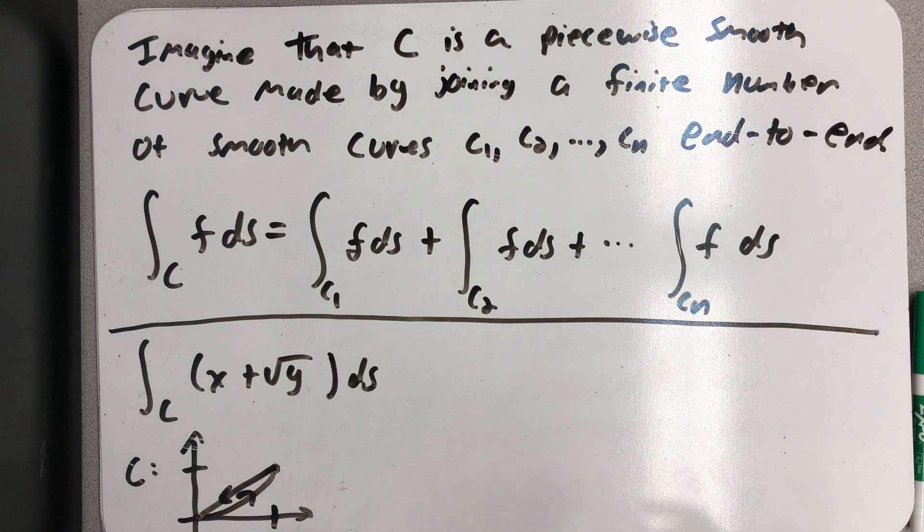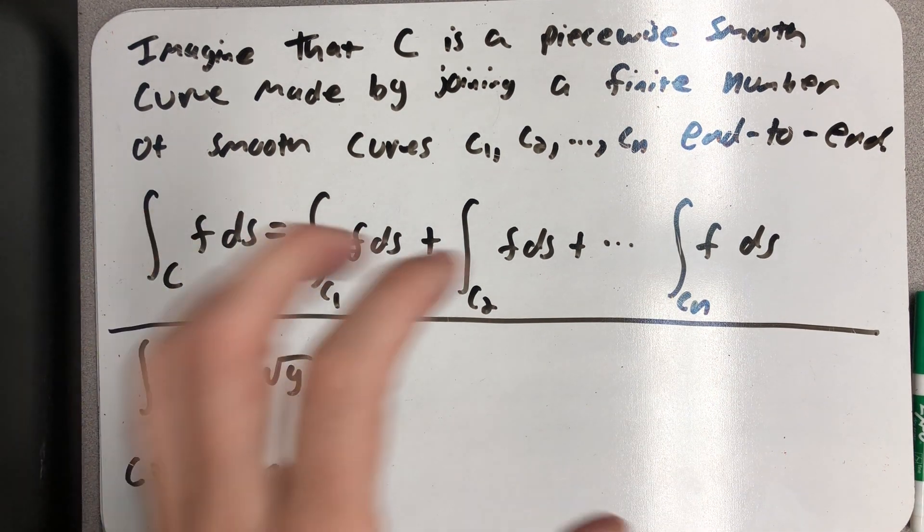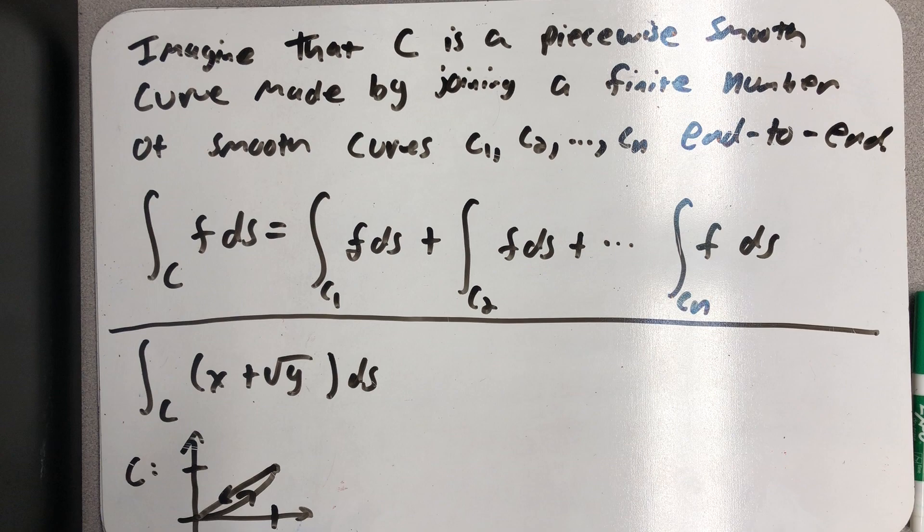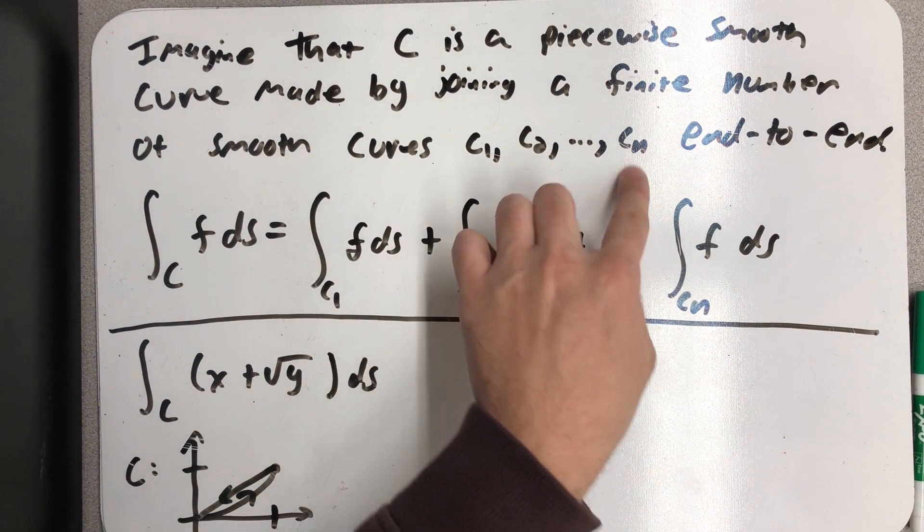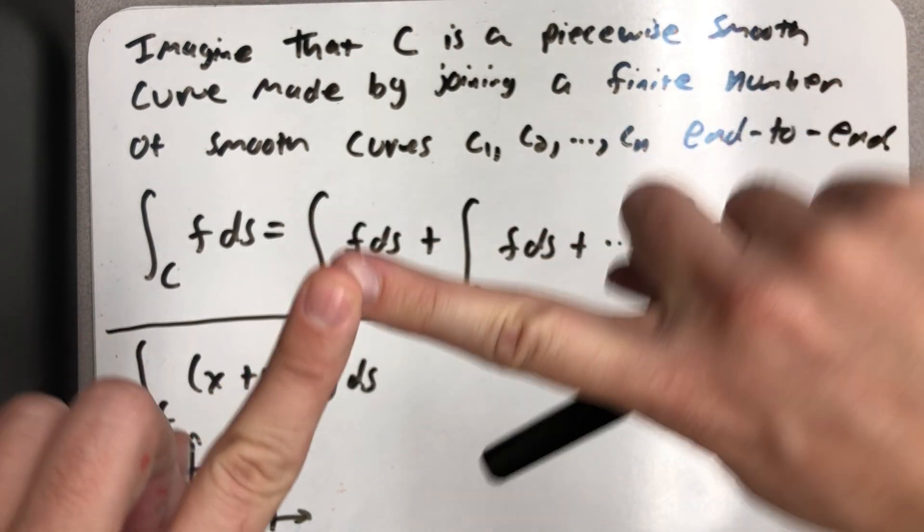If I have a path C that is itself piecewise smooth, that is, each part of it is continuous and differentiable, except for maybe at the points where two segments end, and that curve is made from a finite number of other smooth curves C1, C2, and Cn, that are only joined end to end, so they don't overlap anywhere but the endpoints.